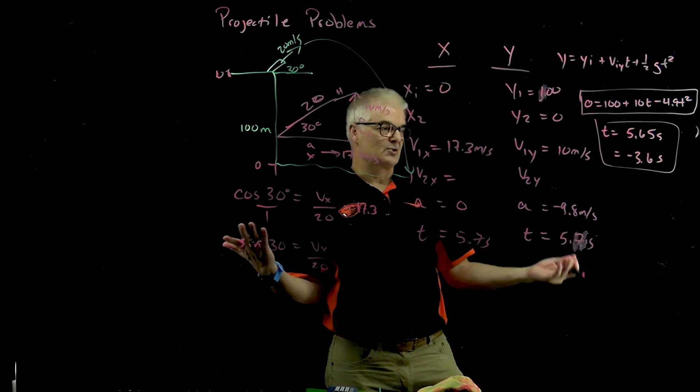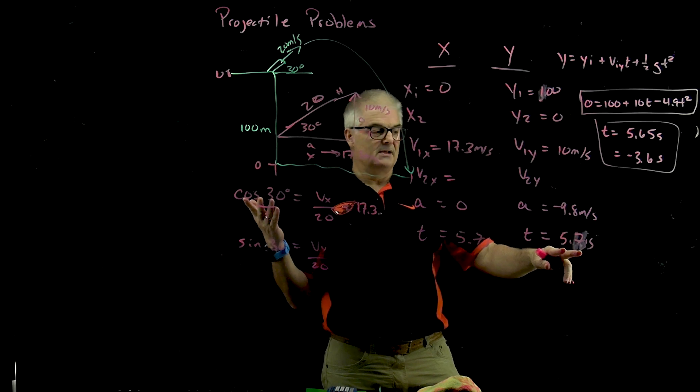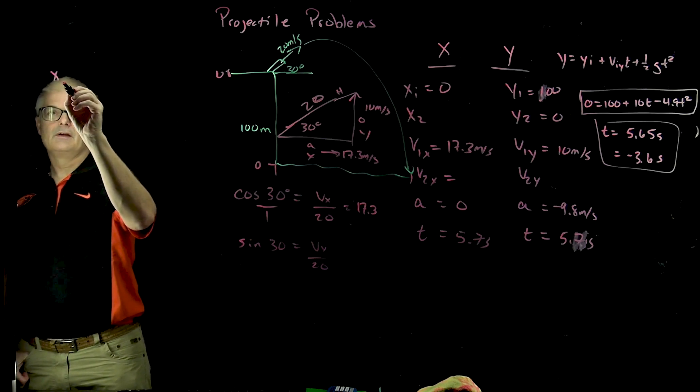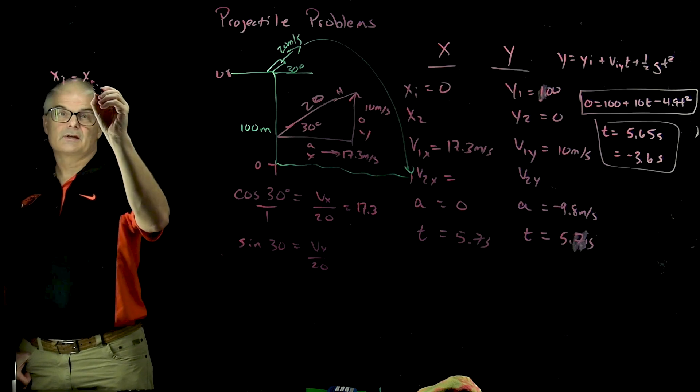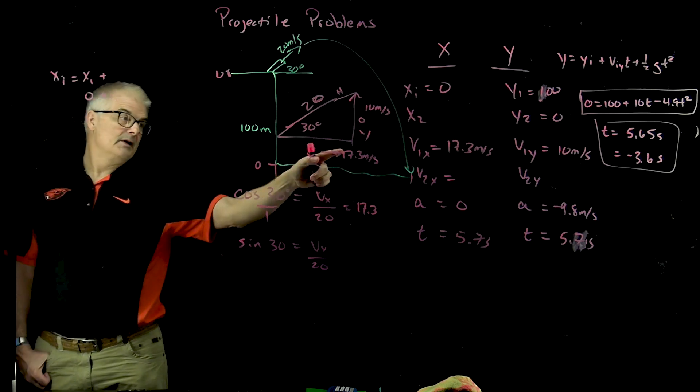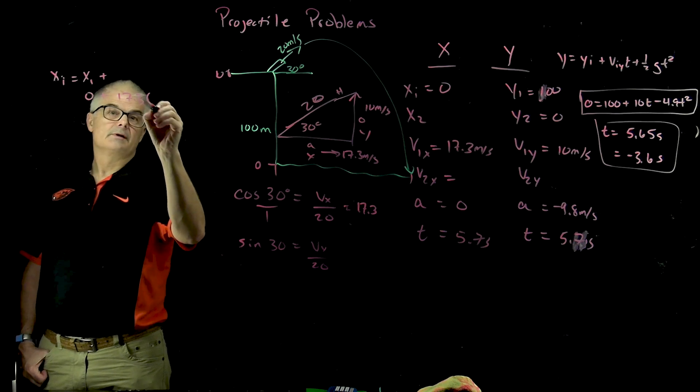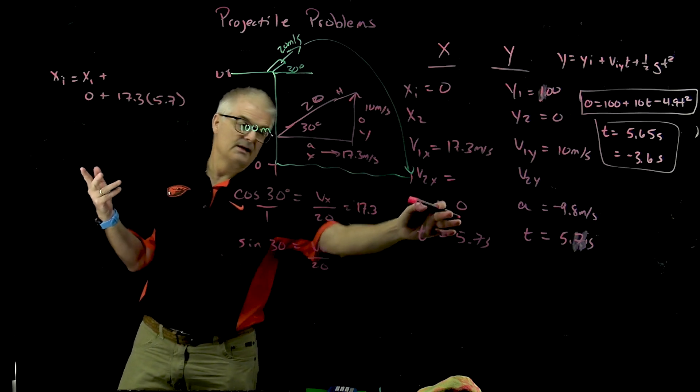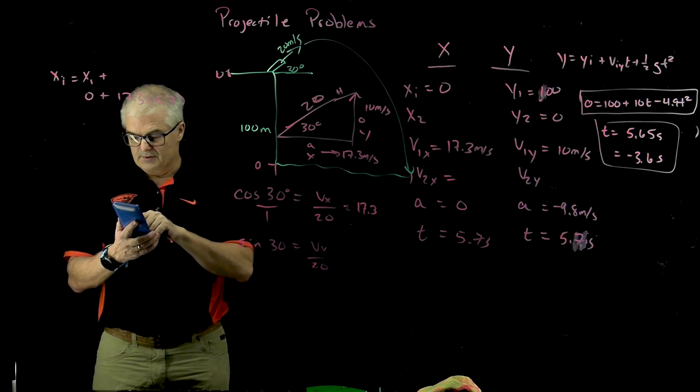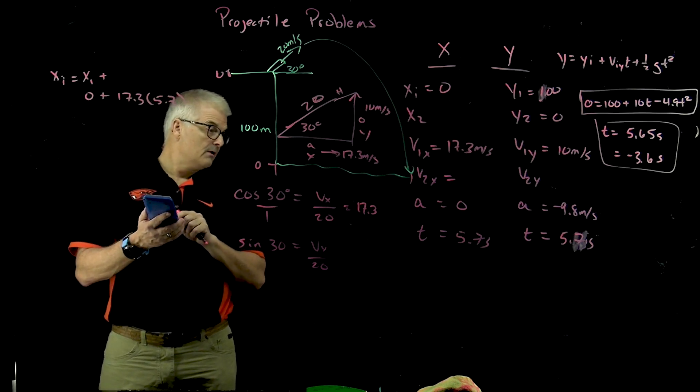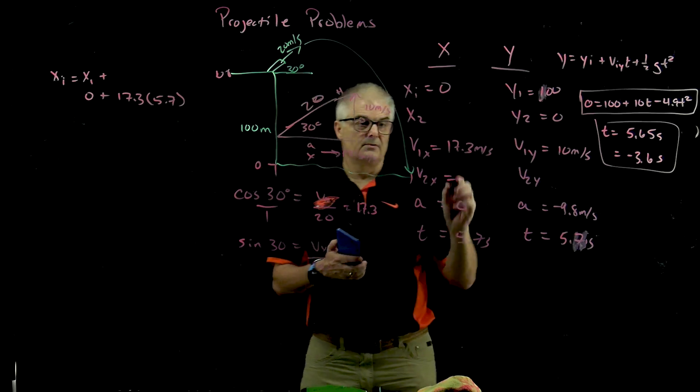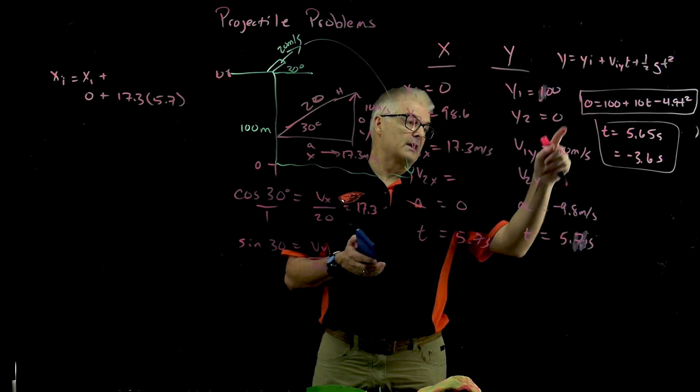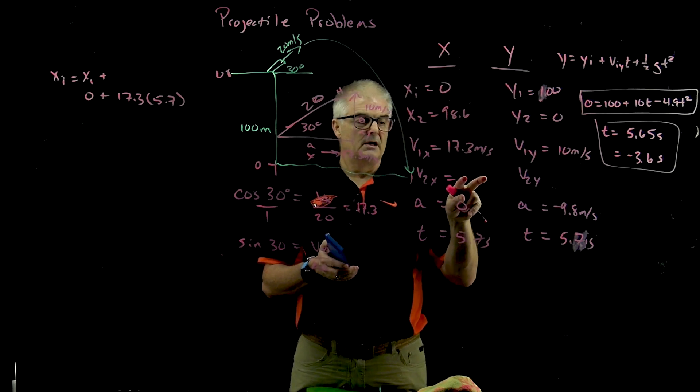Now we can go back and solve these other problems. How far has it traveled? If it's traveling 5.7 seconds in this direction, we use our equation for the x direction: x equals x initial—that's zero—plus vx is 17.3 times 5.7 seconds plus one half at squared, but a is zero. The range is 17.3 times 5.7, gives me 98.6. It's going to travel 98.6 meters in its trajectory.